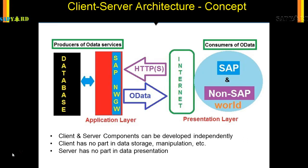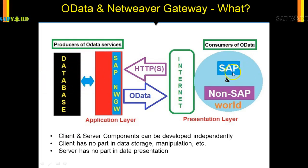This figure illustrates OData and SAP Netweaver Gateway in a client-server architecture. On the right-hand side is the SAP or non-SAP outer world — the consumer. On the left-hand side, called the producer, is the SAP world. For simplicity, the right-hand side is a non-SAP system consuming OData, and the left-hand side is an SAP system producing OData.